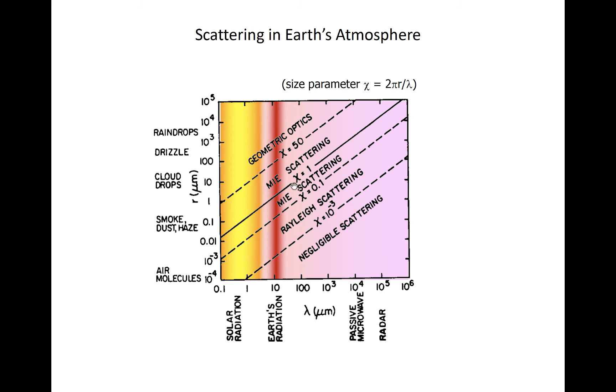You can see the χ equals 1 solid black line running diagonally through the figure. The slope of these lines means that shorter wavelengths are more efficiently scattered in the atmosphere.